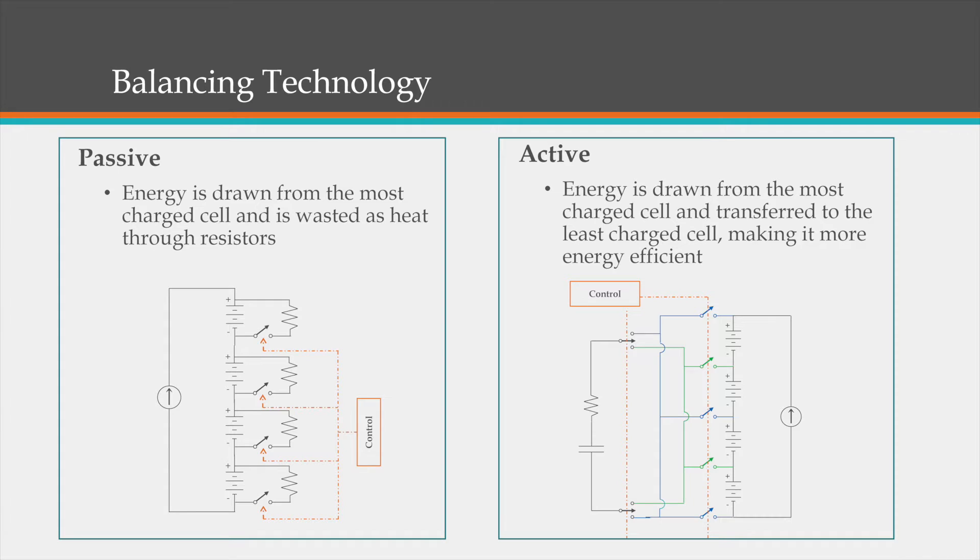In active balancing, the cells are connected to a capacitive load through an array of switches. In this configuration, energy is drawn from the most charged cell and shuttled to the least charged cell through a network of switches. Since this topology transfers the energy from one cell to another, rather than dissipate the energy, it has the advantage of being more energy efficient.